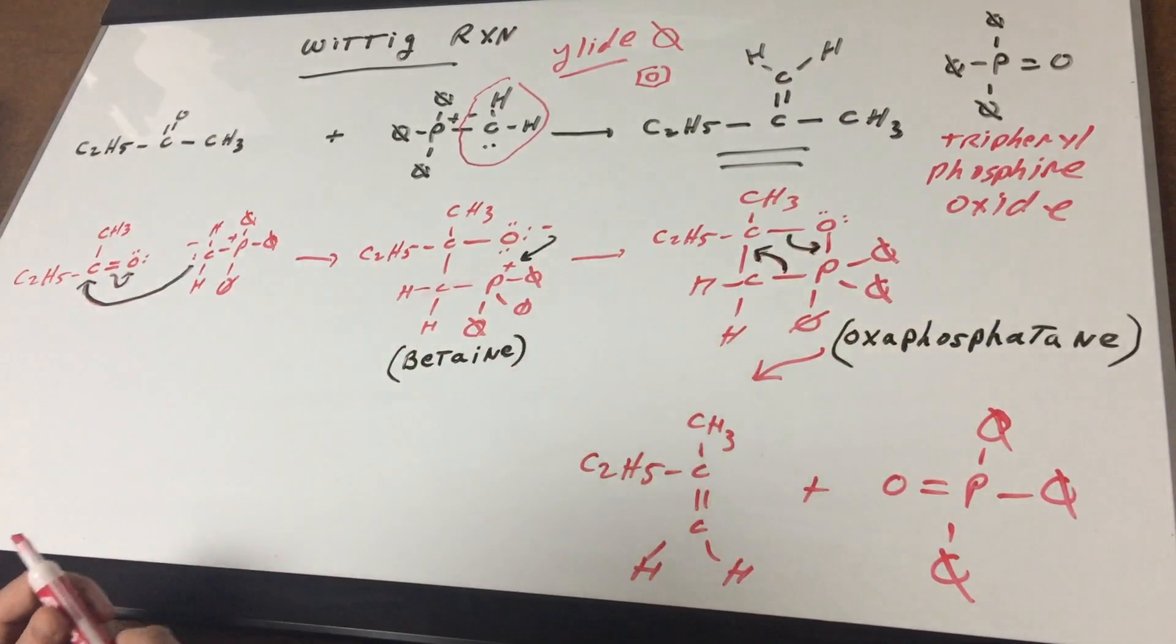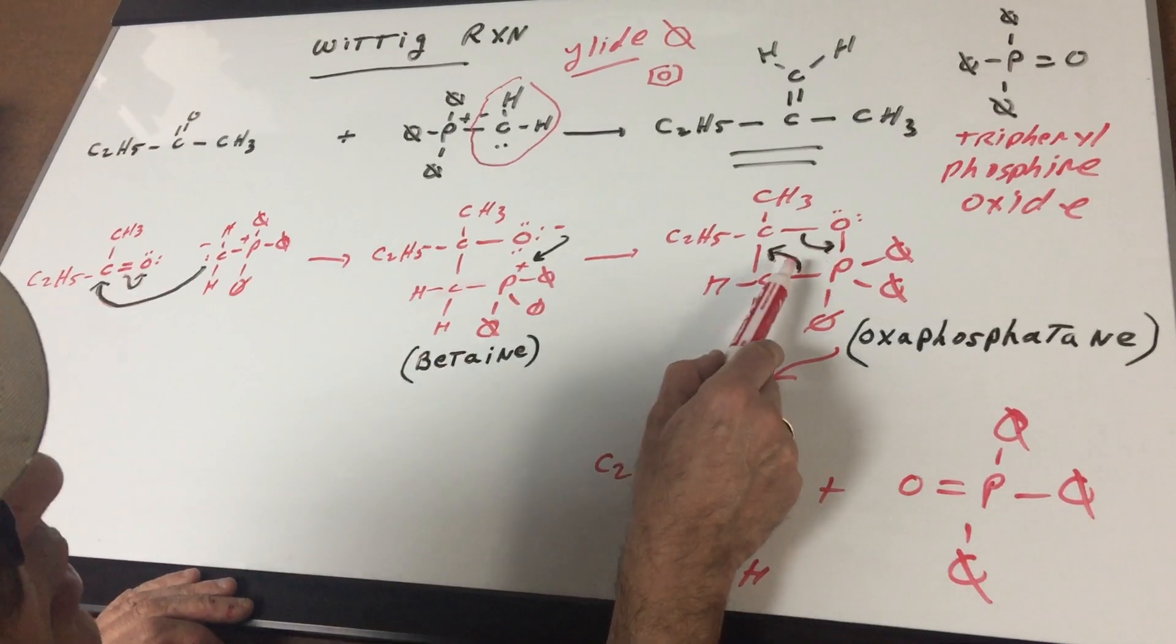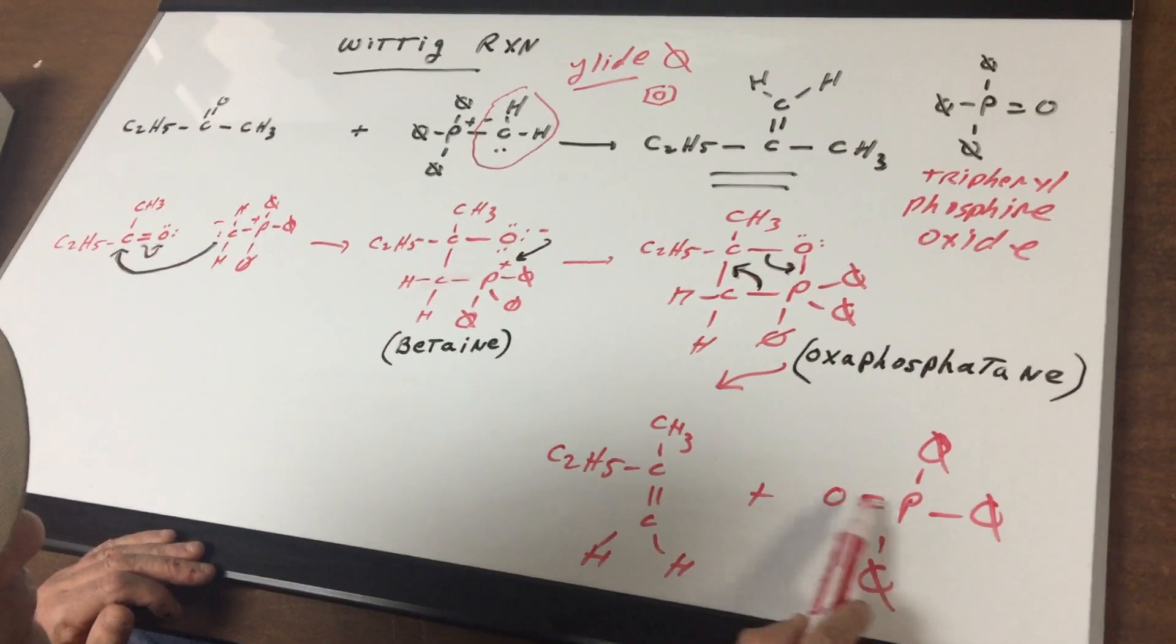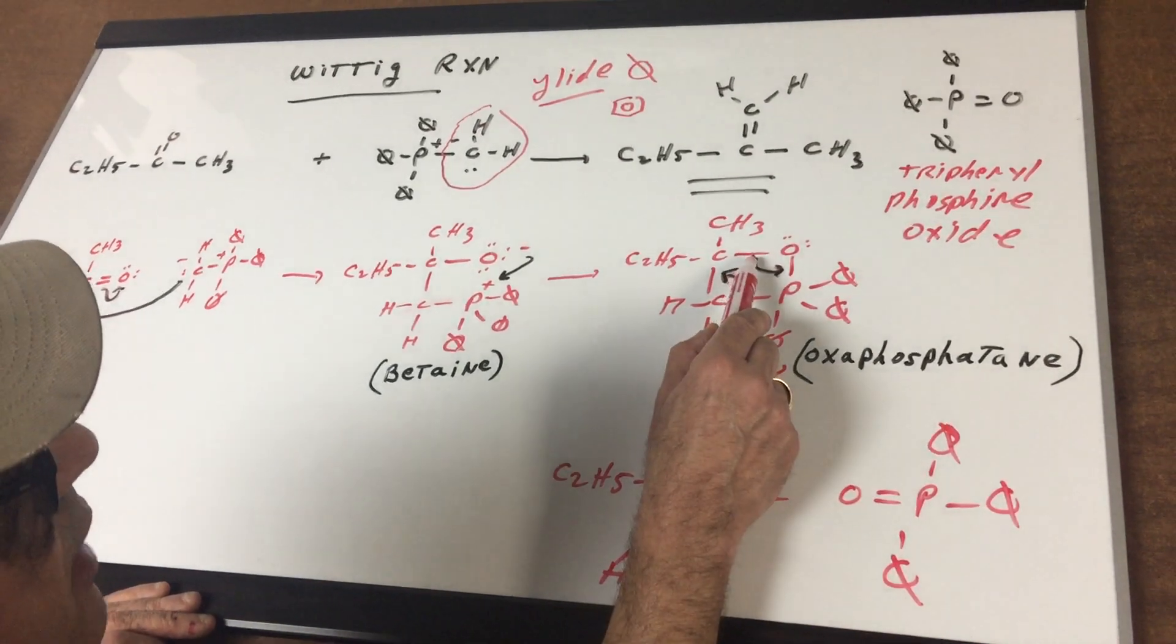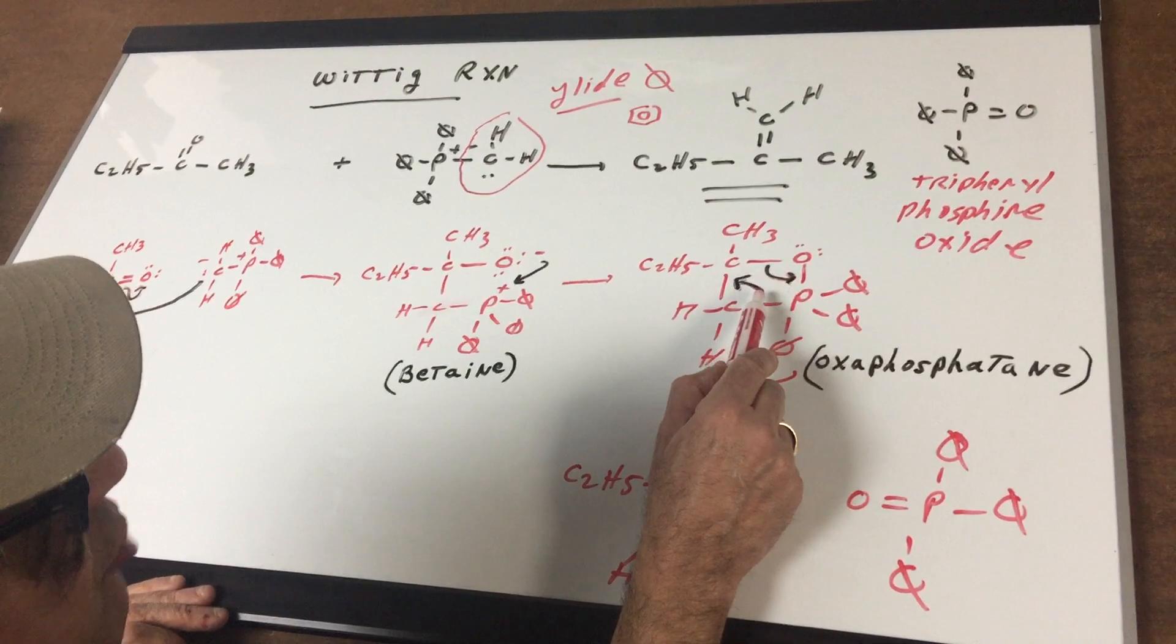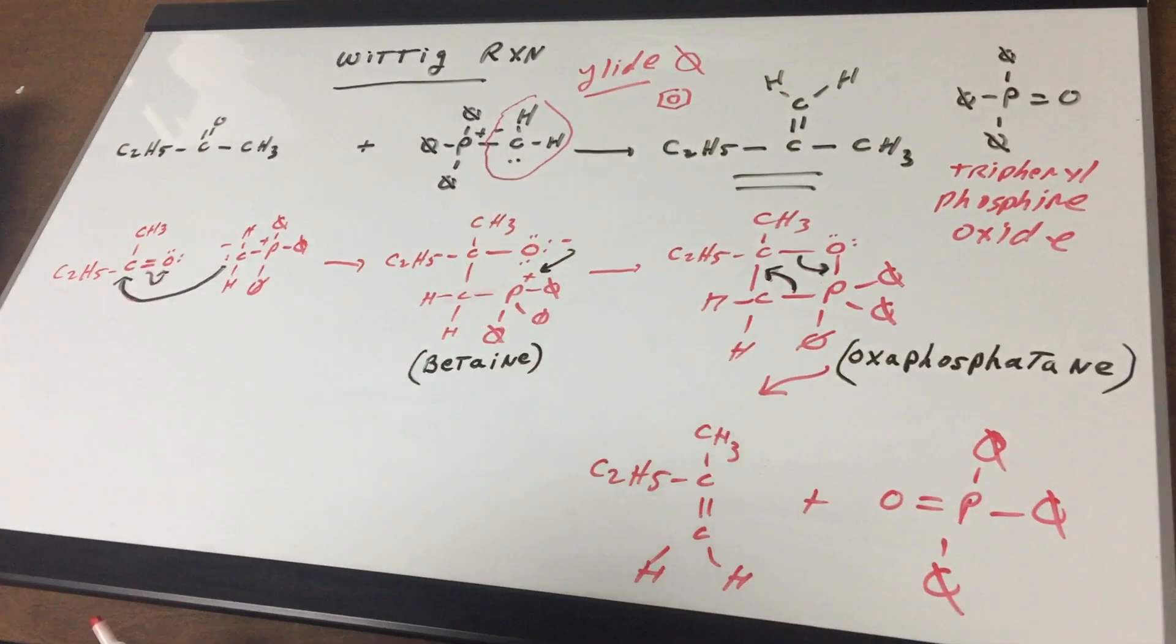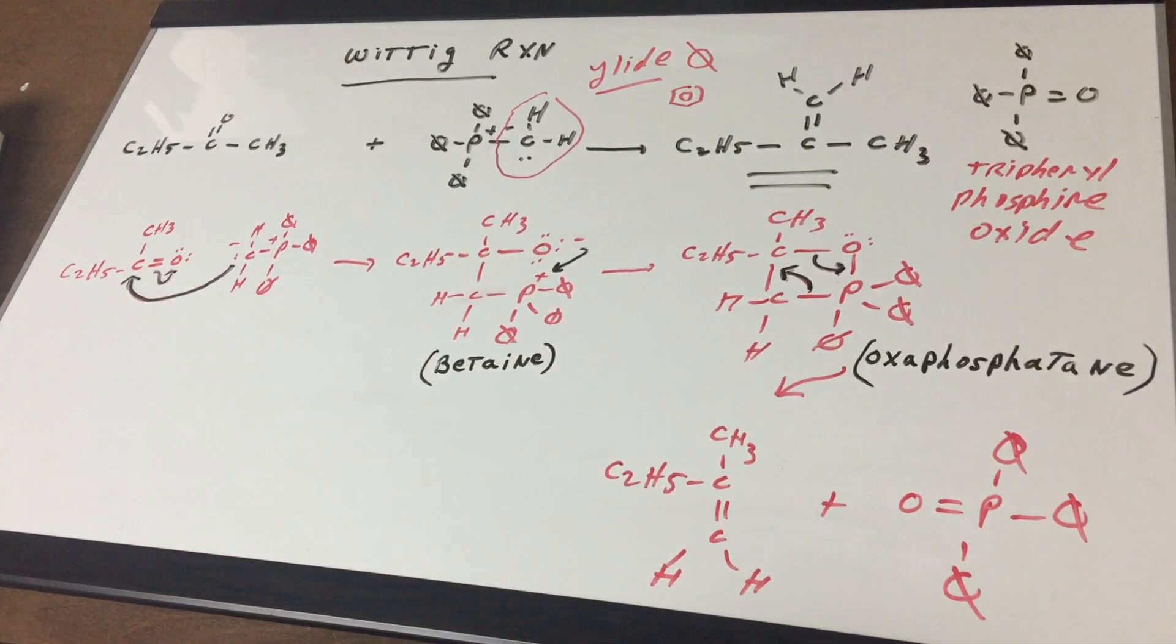But at any rate, you're gonna first get this intermediate, and then this intermediate is gonna collapse when the oxygen attacks the phosphorus and makes what's called an oxaphosphatene. Once you get this oxaphosphatene, this is a weird-looking cyclic intermediate, it's gonna then form a PO bond. This is a driving force. This is a very stable strong bond. And as you can see, when this moves to this portion and this moves to this, this gives you the alkene, which is the same as this, and there's my triphenyl phosphine oxide generated.